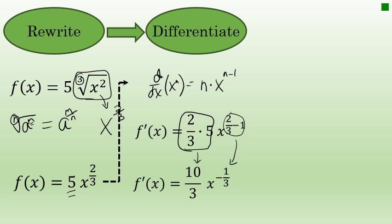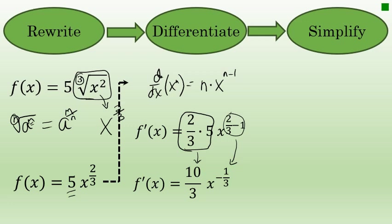However, the derivative has a negative exponent, which we will rewrite. In step 3, simplify. A negative exponent will move the factor of x to the denominator of a fraction. 10/3 times x to the negative 1/3 is equivalent to 10/3 times 1 over x to the 1/3.